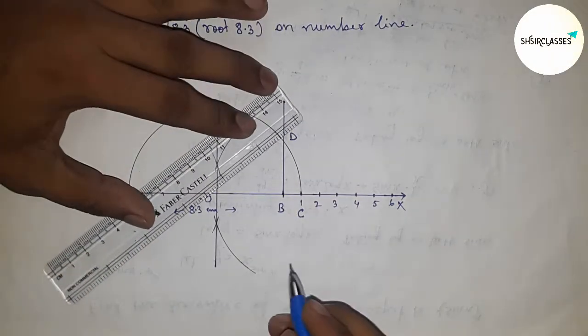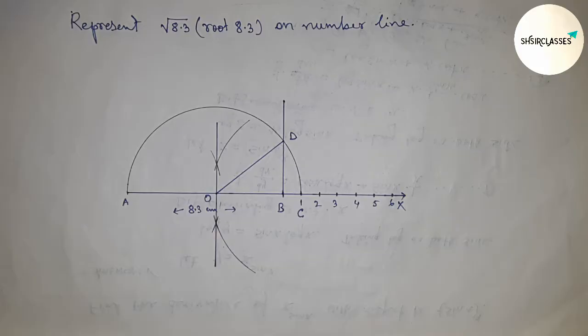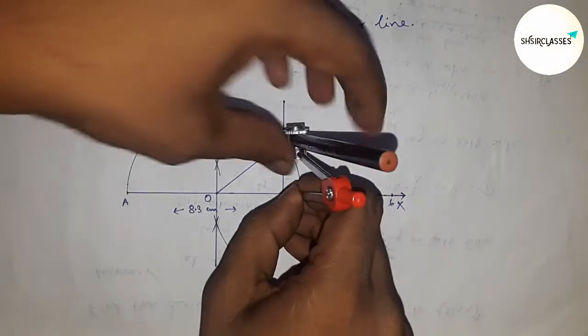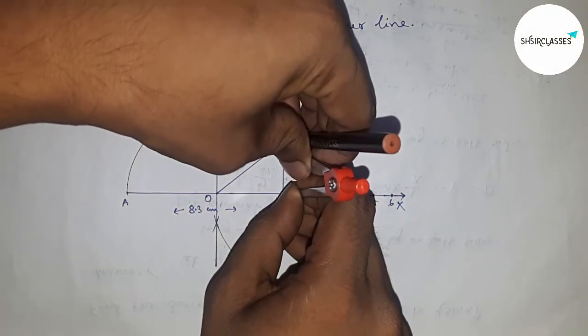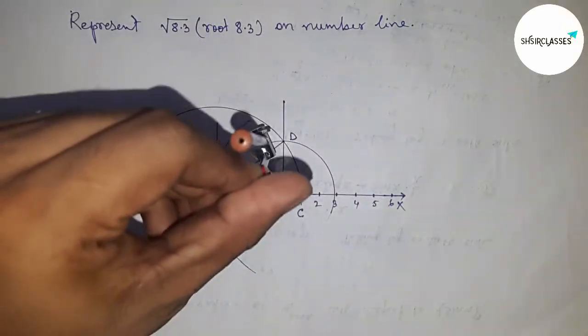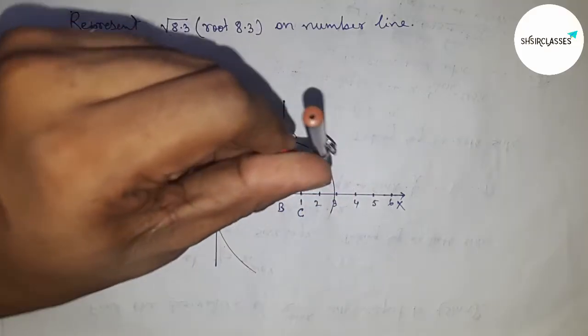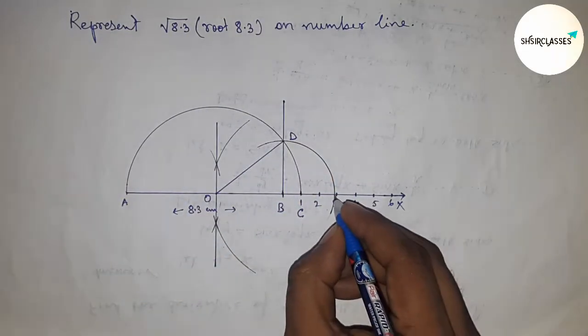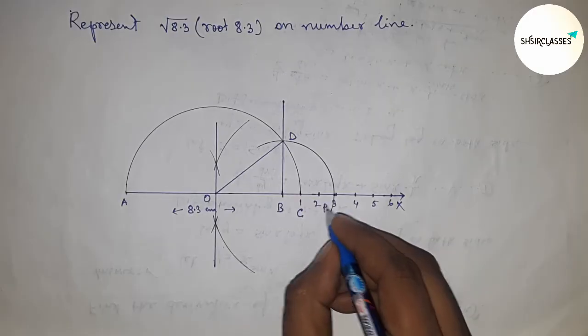Join this line which meets the semicircle at point D. Next, join O and D. Now take the length BD and draw an arc which intersects the number line at point P.